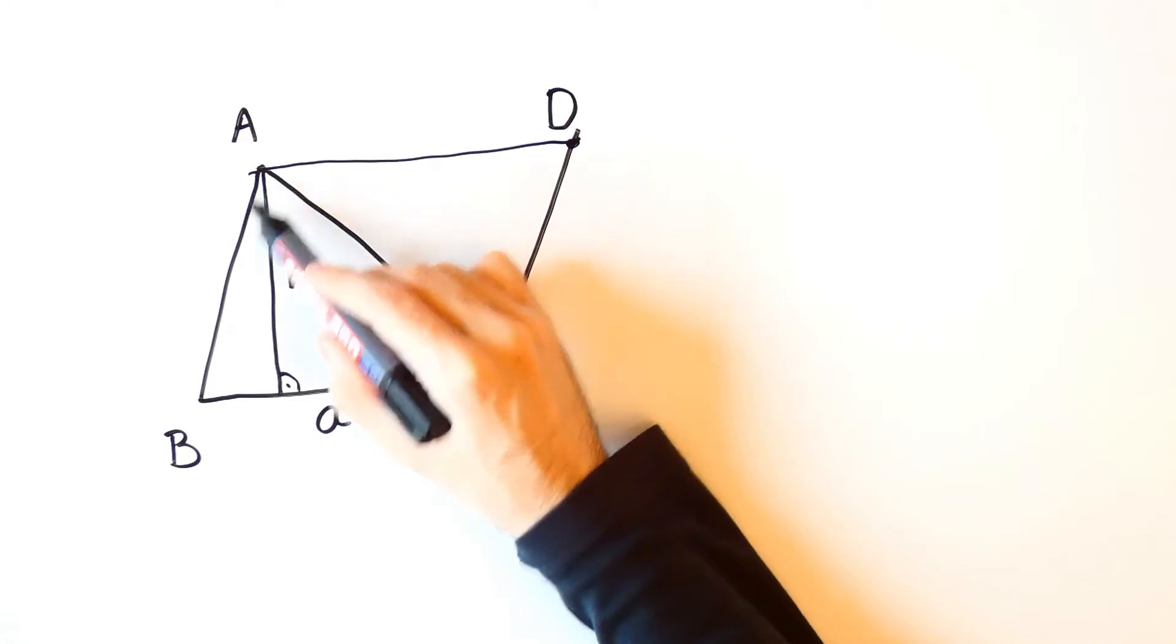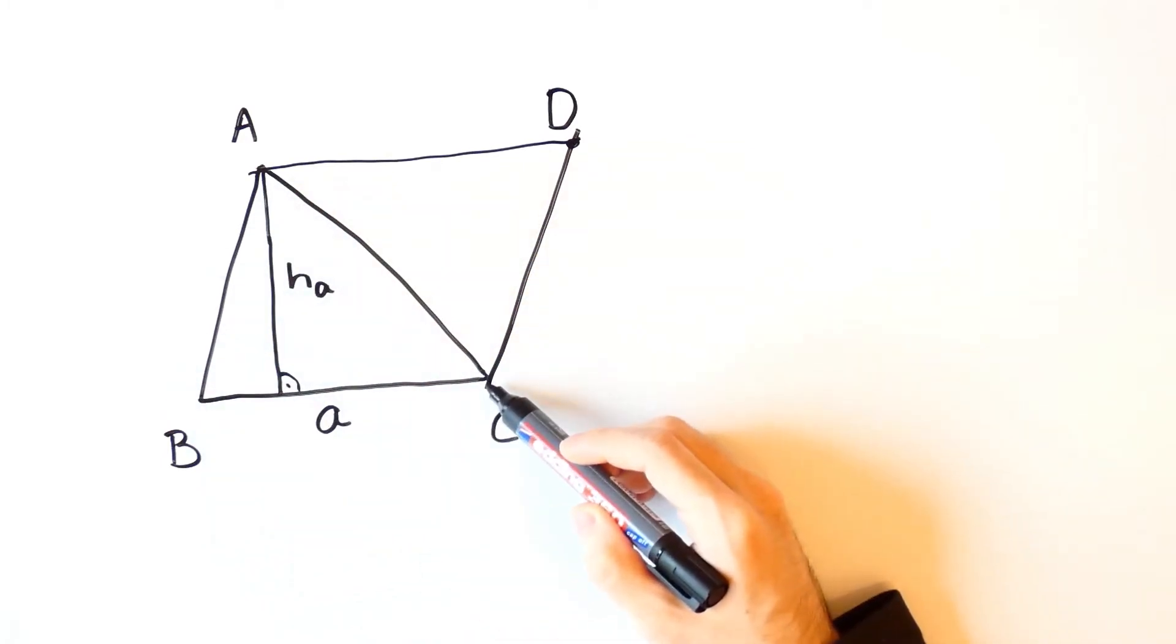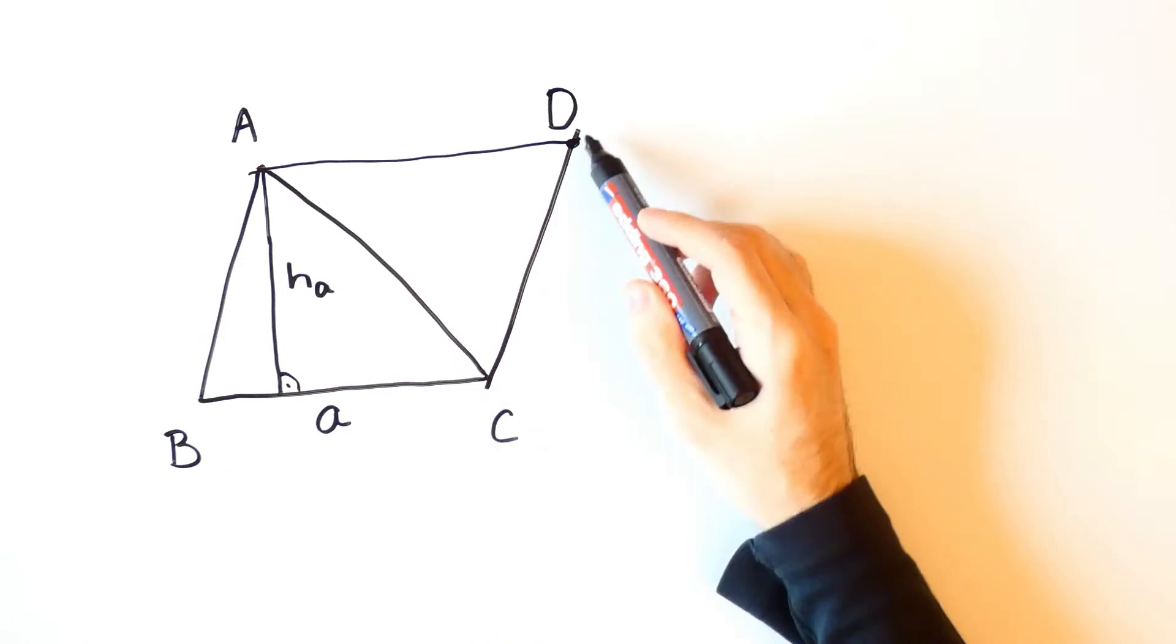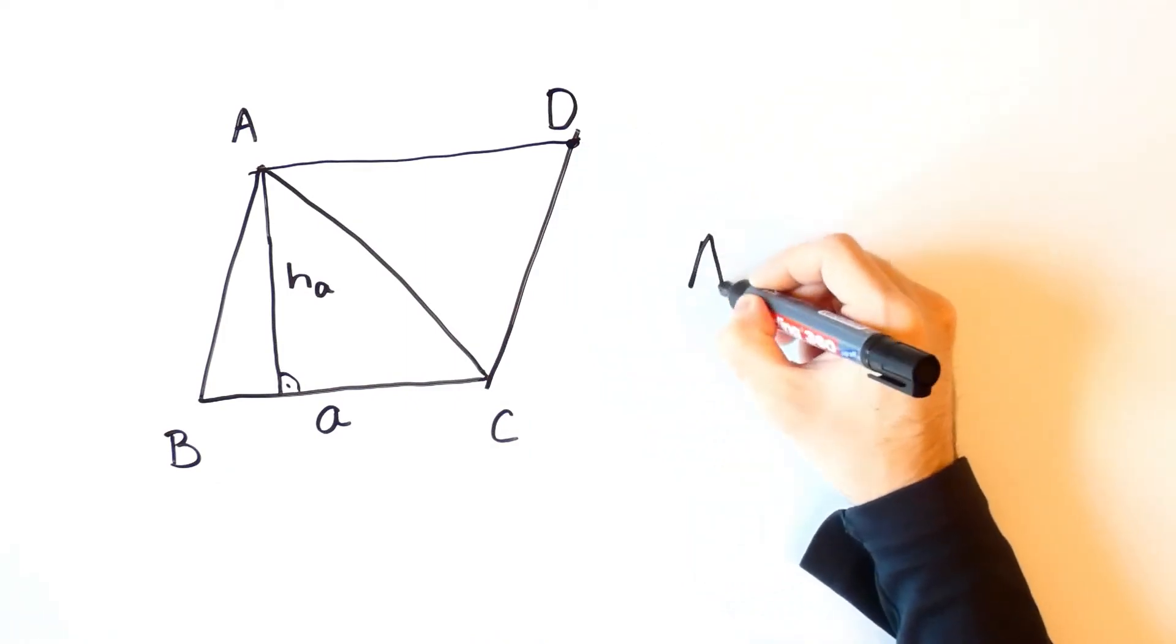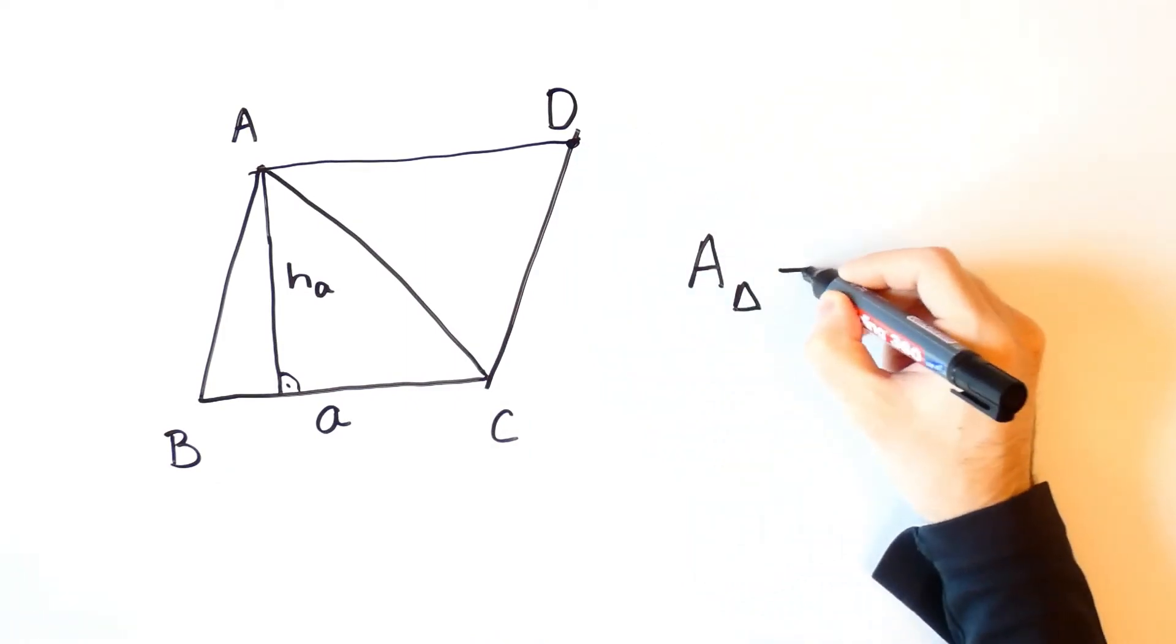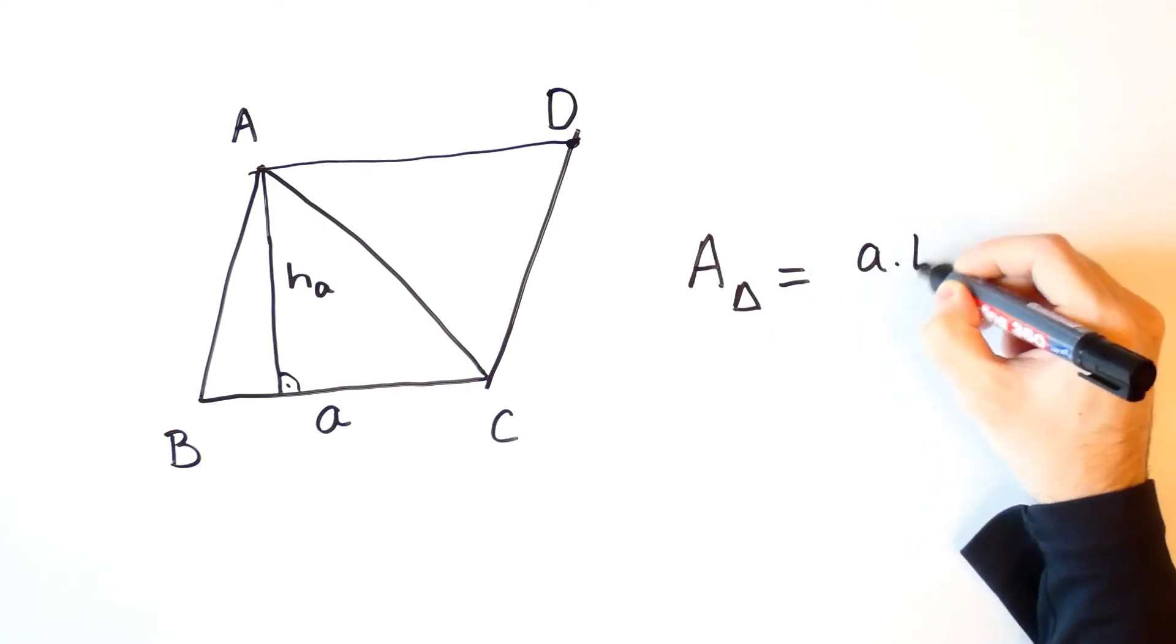Now the area of the triangle ABC is one half the area of the parallelogram ABCD, which means that the area of a triangle is equal to a times ha over 2.